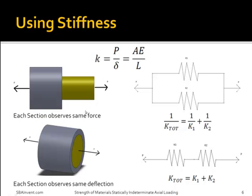For a problem where sections observe the same force, you would have a schematic where the springs are in parallel, and you would use that corresponding equation to solve for total stiffness. If you have a problem that sees the same deflection, you would have a schematic where the springs are in series, and you would use that equation to solve for the total stiffness.